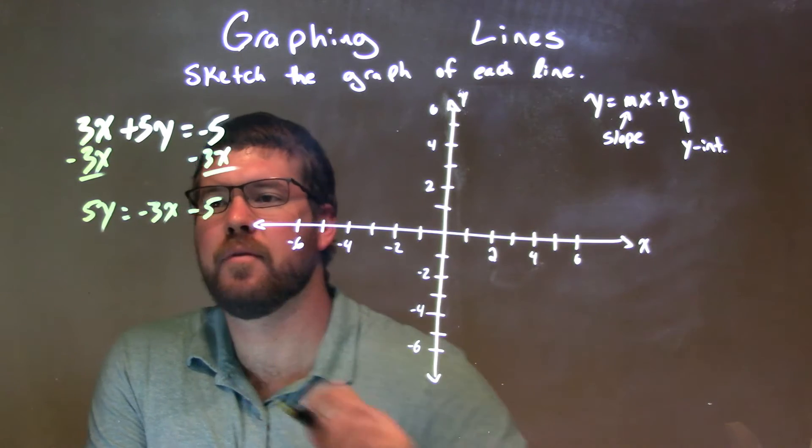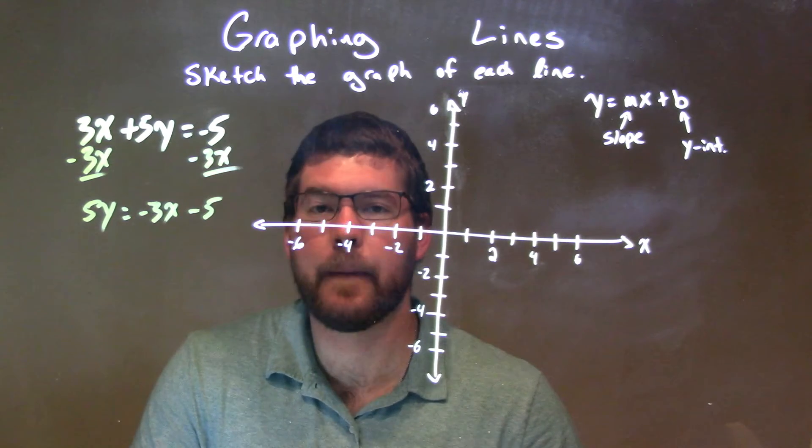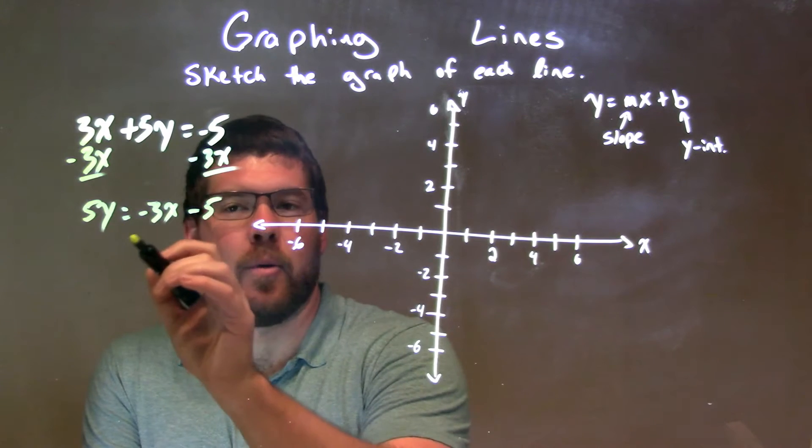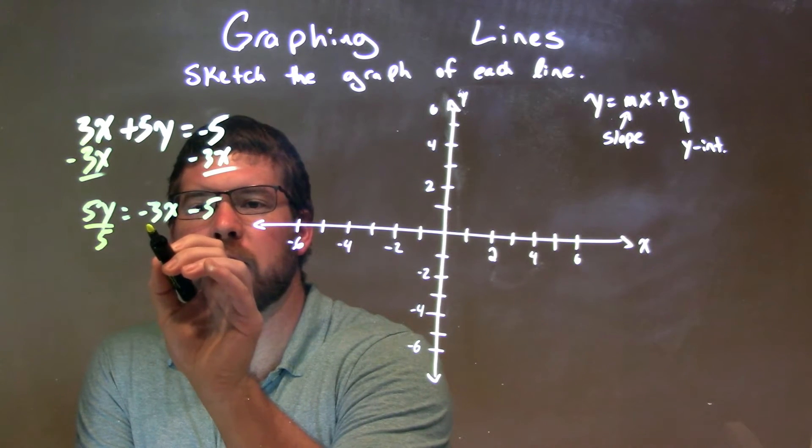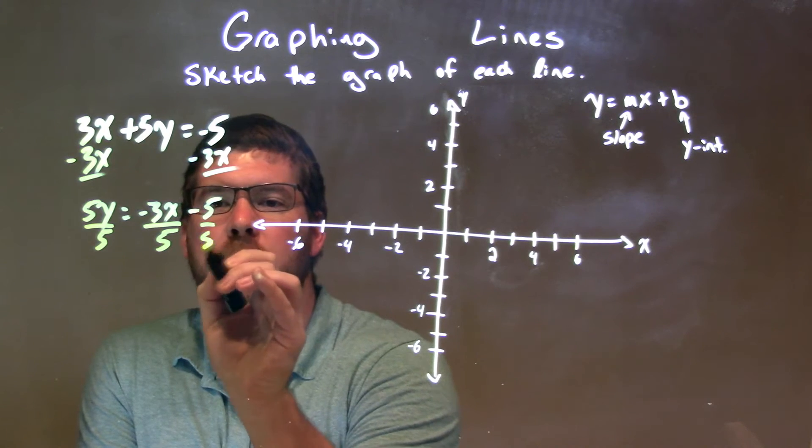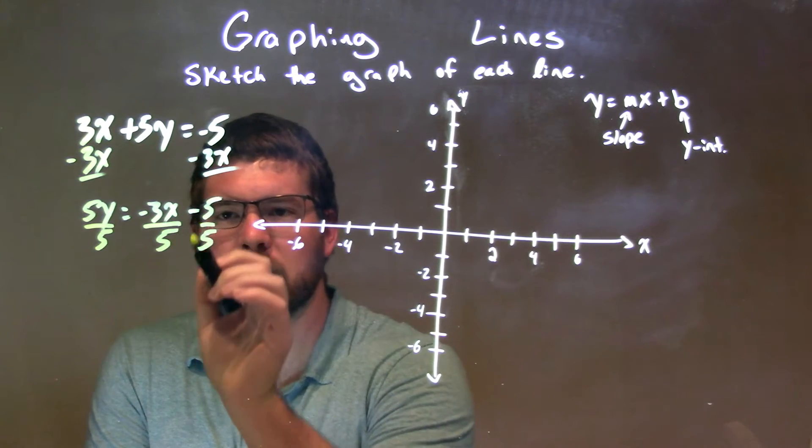So, 5y equals negative 3x minus 5. But then from there, I'm going to get y by itself still, so I'm going to divide it by 5. Now, make sure you divide by 5 to both sides on both parts over here. Don't forget, not just on one of them, both of them.